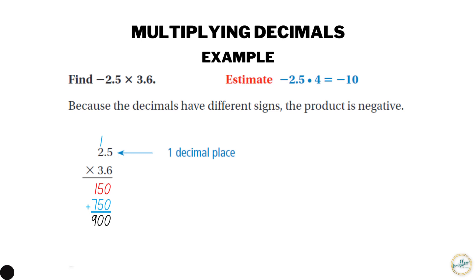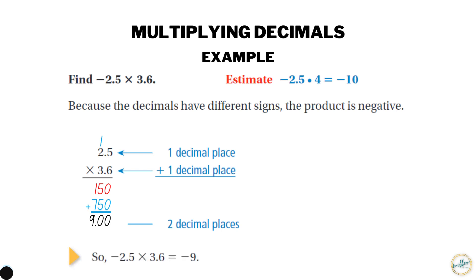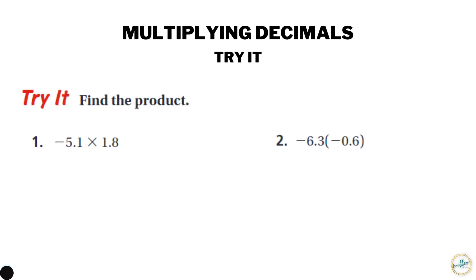The final step is to place the decimal. Two and a half has one decimal place and 3.6 has one decimal place. We add up all the decimal places in the problem — that's how many we put in the answer — so the answer has two decimal places. We estimated around negative ten, and our answer is negative 9.00, which we write as negative nine. Negative nine and negative ten are pretty close, so yes, that's reasonable.